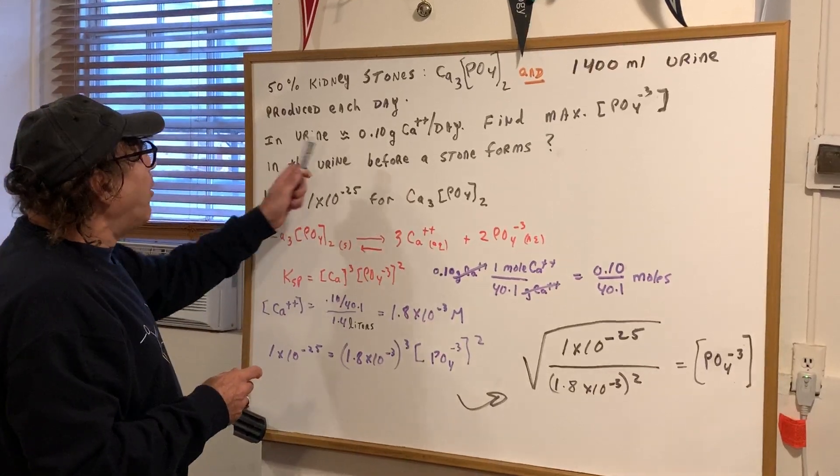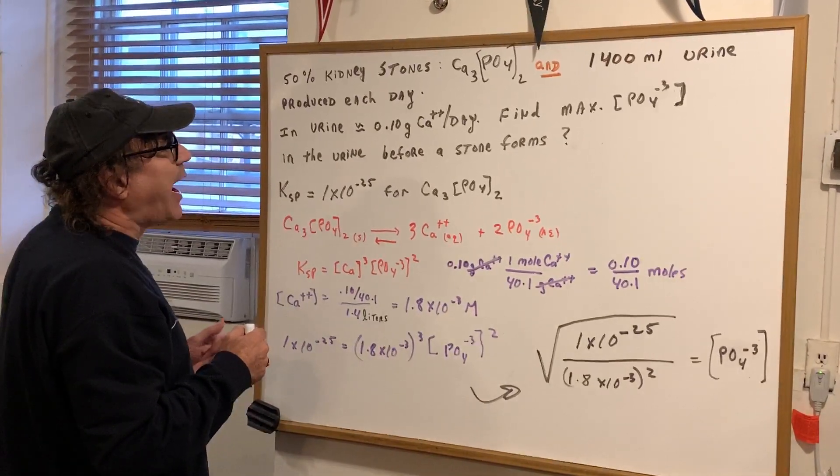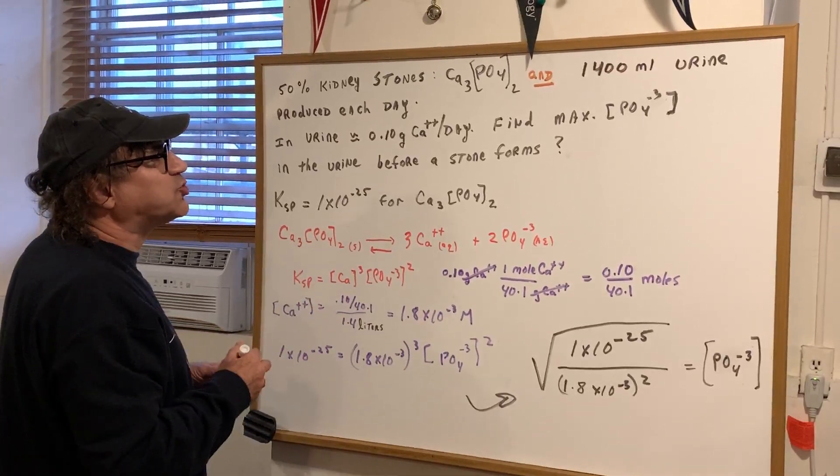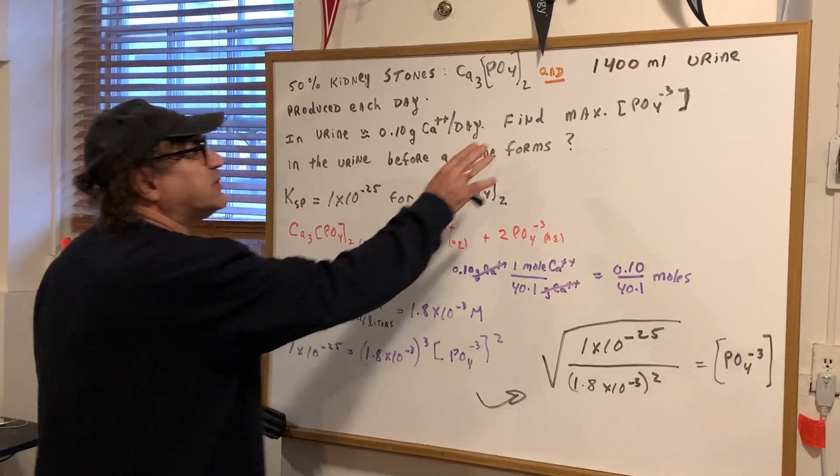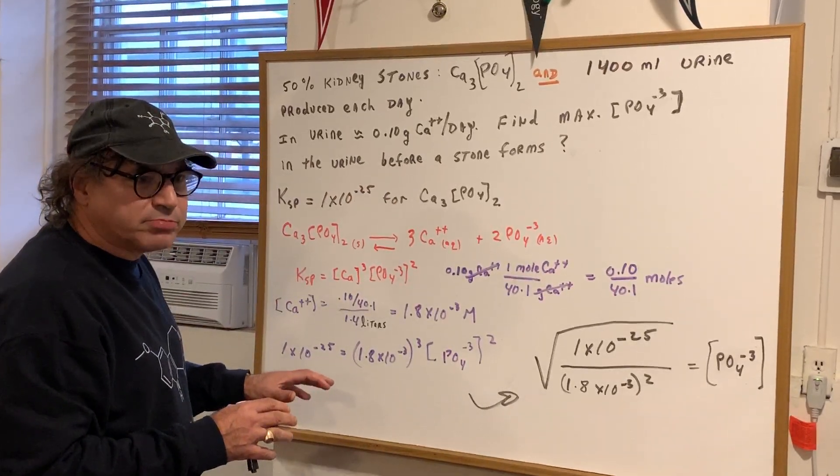That's good to know. Now, in urine, approximately 0.10 grams of calcium per day is excreted. What I want to do is find the maximum phosphate in the urine before a stone forms.